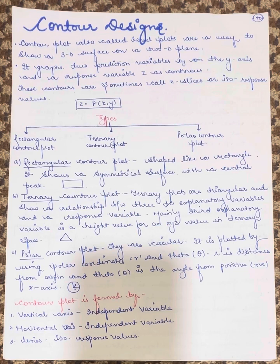The polar contour plot is circular. It is plotted by using polar coordinates R and theta, where R is the distance and theta is the angle from the positive X axis.